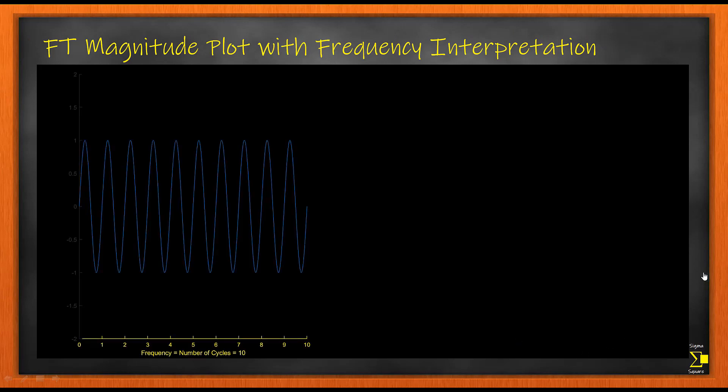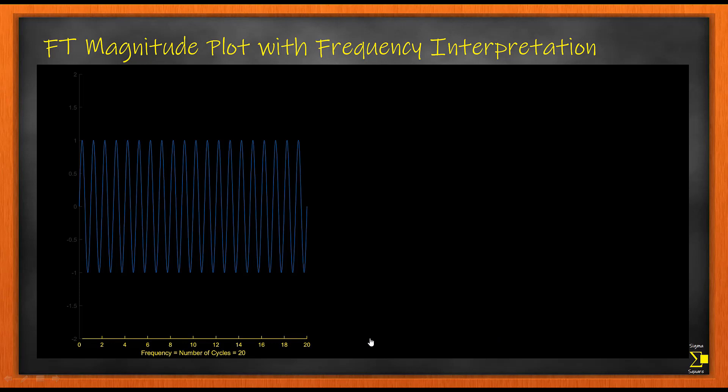Let us see how this looks visually. Here you have a sine wave of 10 cycles. The number of cycles in this waveform is 10 as you can see, and the Fourier Transform is having a peak at 10.